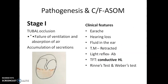The pathogenesis and clinical features of ASOM can be divided into four stages. Stage 1: tubal occlusion — when the eustachian tube is occluded, there is no ventilation of the middle ear and no drainage of secretions, so fluid accumulates. You can see fluid within the middle ear via the tympanic membrane, which is intact but shows fluid levels. The patient complains of earache, hearing loss, and fluid sensation in the ear. The tympanic membrane is slightly retracted, the light reflex is absent, and tuning fork tests reveal conductive hearing loss — bone conduction is better than air conduction (Rinne's test reversed), and Weber's test shows lateralization toward the affected ear.